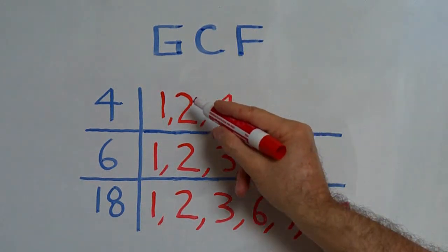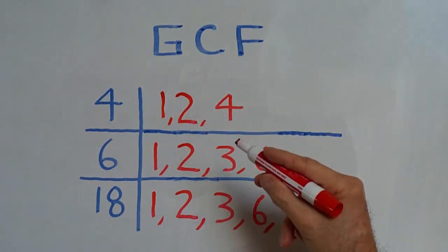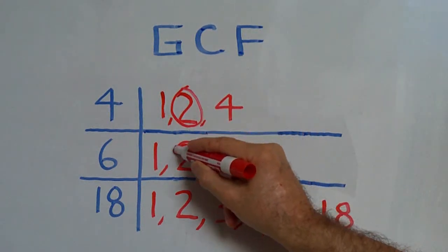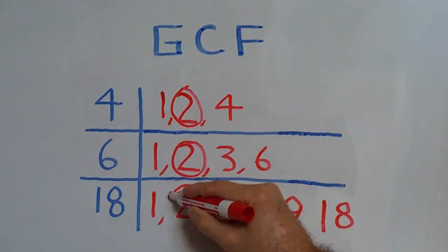Then we look for common factors, and the factor with the greatest value, in this case it's 2, will be the GCF.